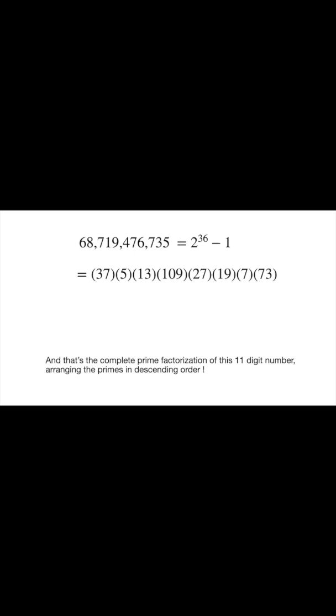So now we've completely factored this number 68,719,476,735. And now I've simply written the primes in descending order. And of course, I wrote 27 as 3 cubed. And that's the complete prime factorization of this 11 digit number using a few extra tricks like the difference of two squares and Fermat's little theorem.